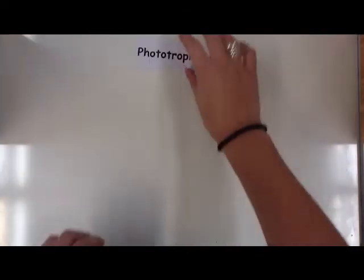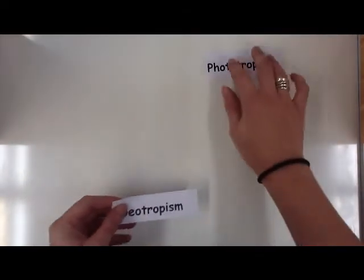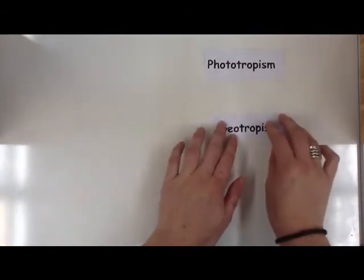And there's different types of stimuli. So plants can respond to temperature and this is known as thermotropism. They can respond to water, which is known as hydrotropism. The ones that we're looking at is how they respond to light and also gravity. So we have two key words here. So remember, if I say key word, you should definitely know these for your exam. We've got phototropism and geotropism.